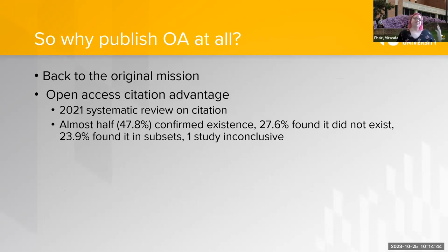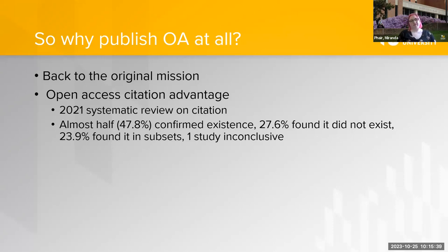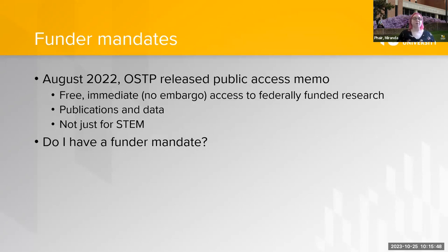You might be wondering why publish open access at all. Going back to the original mission of the Berlin Declaration, it is good to be sharing research, especially when a lot of it is taxpayer-funded and people can't even read it. It's also good for you as a researcher — there's been talk about the open access citation advantage. More people being able to see your article means more likelihood it will be cited. A 2021 systematic review found that almost half of studies confirmed the citation advantage exists, about a quarter concluded it didn't, and a quarter found it in certain disciplines.